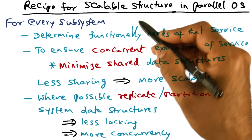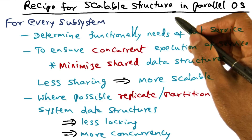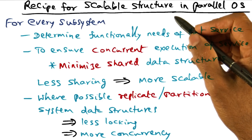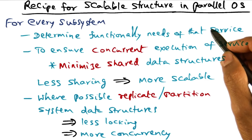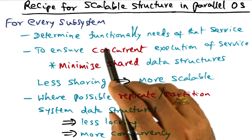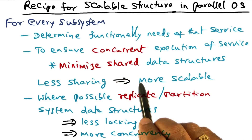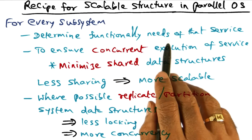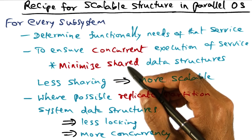Popping up a level, what we can learn from the example I just gave you with page fault service is that in order to design a scalable operating system service in a parallel operating system, we have to think about what is the right recipe. For every subsystem that you want to design, first determine functionally what needs to be done for that service. With parallel hardware, the functional part of that service can be executed in parallel across the different processors that are available.